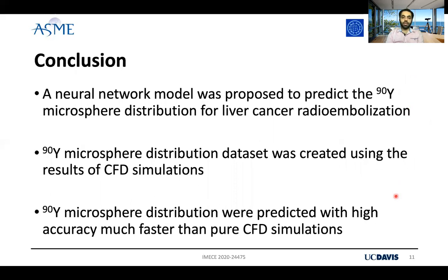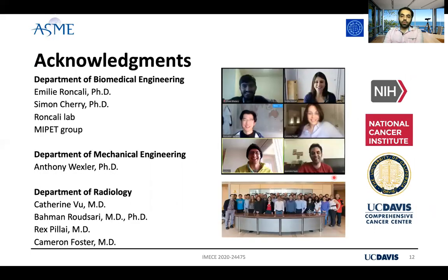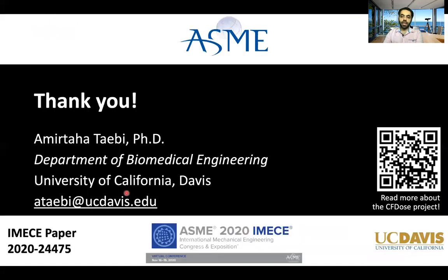As conclusions, we developed a neural network to predict the yttrium-90 microsphere distribution, and we obtained good accuracy and mean squared error results. I would like to thank our funding resources, including the National Cancer Institute and UC Davis Comprehensive Cancer Center, as well as my colleagues in the Roncalli lab and other departments at UC Davis. If you are interested to read more about our CFD dosimetry project, please scan the QR code. Thank you very much for your attention.